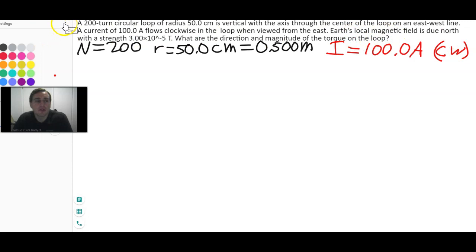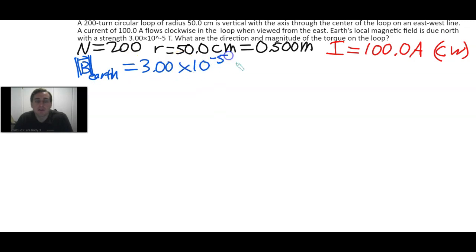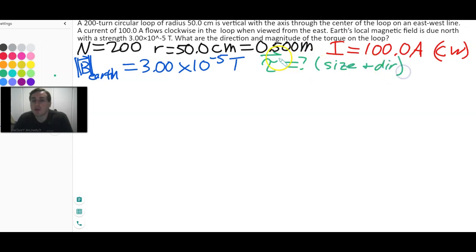Earth's local magnetic field. We know its strength. So let's put that in blue. So the magnetic field magnitude of Earth here is 3.00 times 10 to the minus 5 teslas. So that's going to be 0.3 gauss. So that's a small value, but still reasonable for Earth. And we want the direction and the magnitude of the torque vector that results. So we want this as a vector. So this is size and direction.